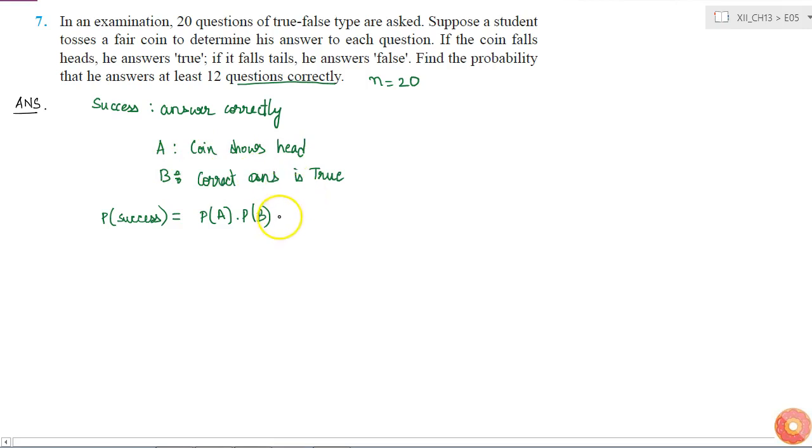So either the coin should come head and the answer should be true, or the answer should be false—that is probability of B complement—and the coin should also get tails. So in these two cases, I'll get success. So this is probability of A complement into B complement.